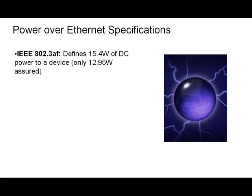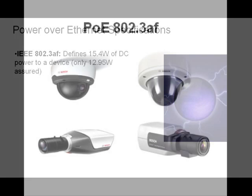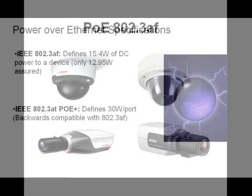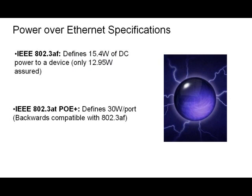When choosing a switch for your installation, you must be aware of the fact that there are two PoE specifications. The first is 802.3AF, which defines that 15.4 watts of DC power is supplied to a device. Most non-PTZ cameras are 802.3AF devices. The second IEEE specification is 802.3AT, or PoE+, which defines that 30 watts of power will be supplied to any PoE device connected to the switch. This is also backward compatible with 802.3AF.